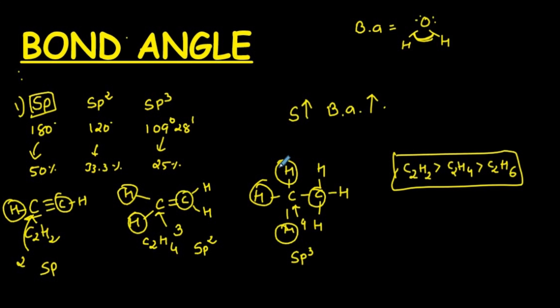So in this case, you can simply say that C2H2 will have the highest bond angle, then C2H4, and the least bond angle will be in C2H6. On the basis of hybridization you can find the bond angle. This is a very simple trick.